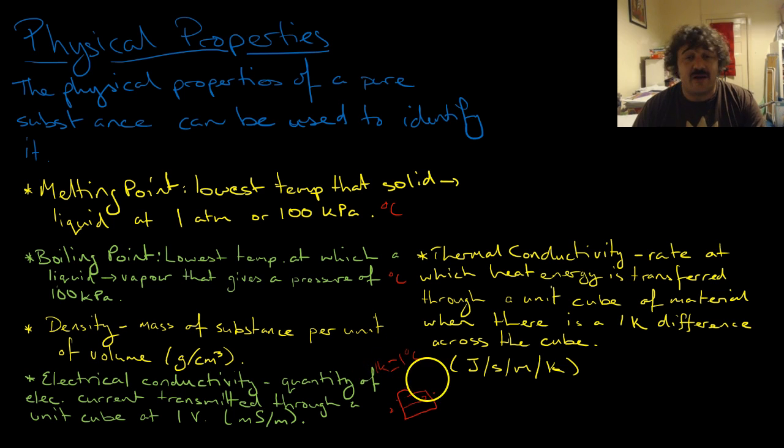Now, one Kelvin is like minus 270 something. But a change in one Kelvin is a change in one degree Celsius.